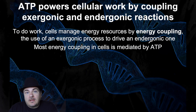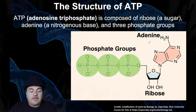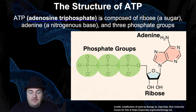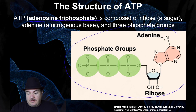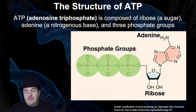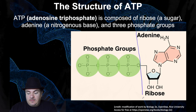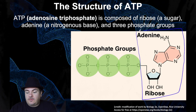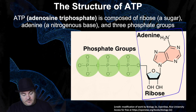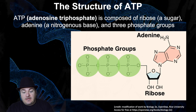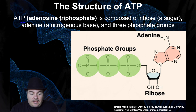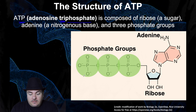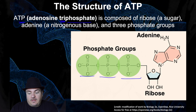Most energy coupling inside your cells is done through ATP. ATP stands for adenosine triphosphate. Adenosine is adenine plus ribose together — that's the 'A' in ATP. The 'TP' stands for triphosphate; tri means three, so this tells you there are three phosphate groups. That's ATP.